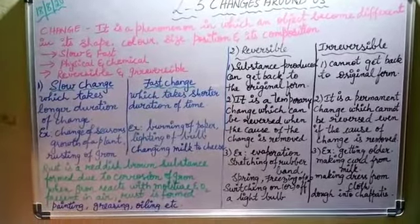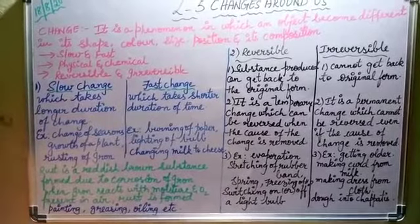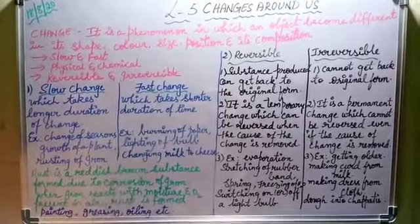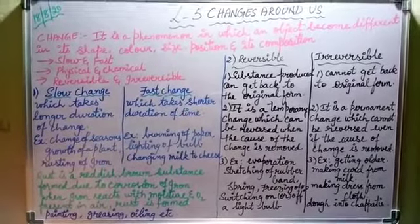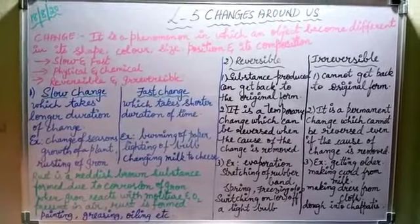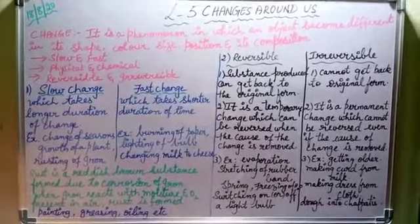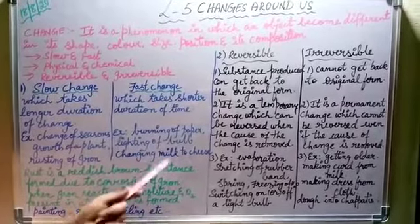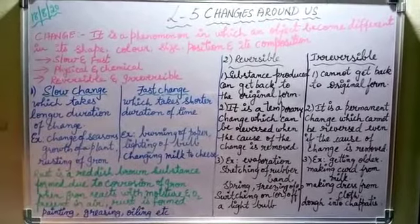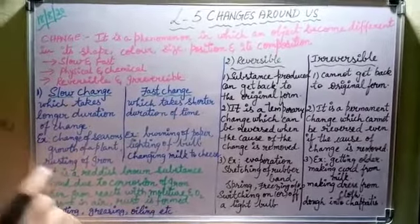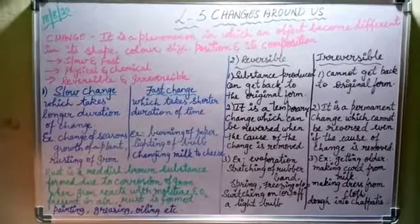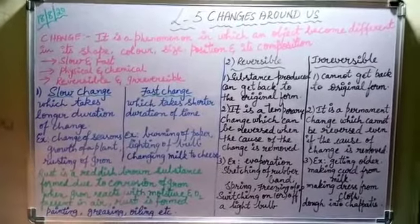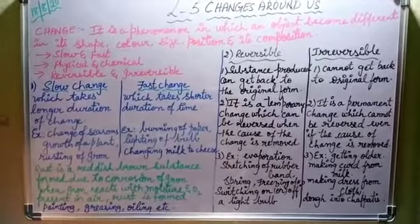Now, examples of fast change: burning of paper — when you burn paper it immediately changes into ash, so it is a fast change. Lighting of a bulb — when you switch on the bulb it glows; switch it off and it stops. Also, changing milk into cheese — just one drop of lemon juice in milk changes it completely into cheese.